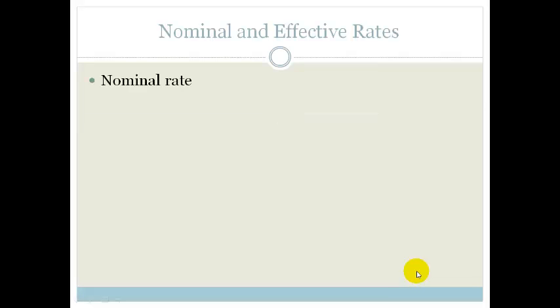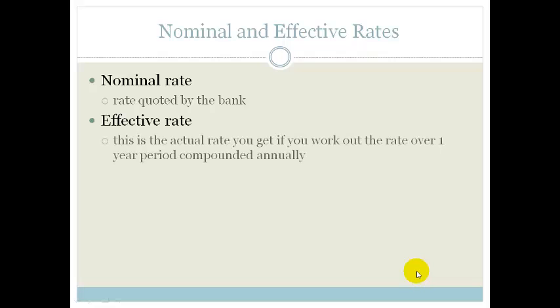But what are they? The nominal rate is the rate quoted by the bank, whereas your effective rate is the actual rate you get if you work it out over a period of one year and it's compounded annually.